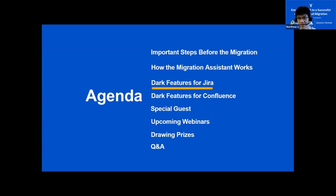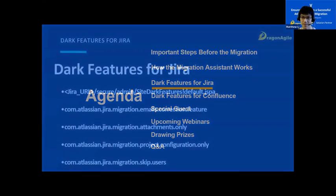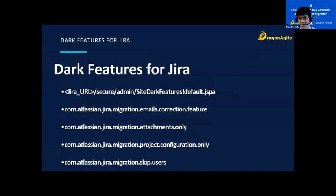Now we'll talk about some dark features for the Jira Cloud Migration Assistant. Since we didn't cover these in the test migration, we'll talk about them in this production migration webinar. The Jira Cloud Migration Assistant has a few dark features that can be manually enabled, including bypassing certain migration checks, possibly migrating more data, and other features. However, these features are still under development and should be experimented on during the test migration. To access the dark feature tab, go to your Jira URL slash secure, and the rest of the link is shown on screen.